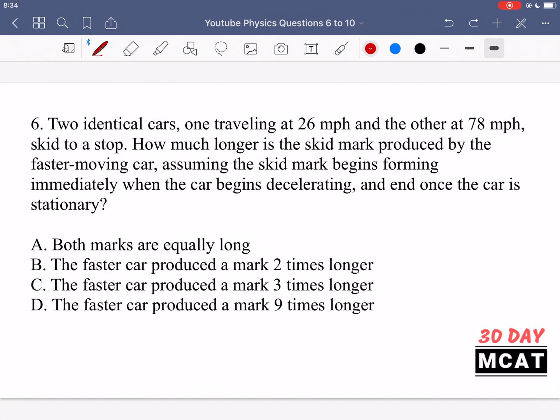In question 6 it says two identical cars, one traveling at 26 mph and the other at 78 mph, skid to a stop. How much longer is the skid mark produced by the faster moving car, assuming the skid mark begins forming immediately when the car begins decelerating and ends once the car is stationary. So we have two identical cars, note that they're identical which means their mass is going to be the same, their force of friction against the ground is going to be the same as well.